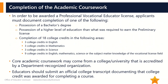In order to be awarded a professional vocational educator license, applicants must have completed one of the following options: possession of a bachelor's degree; possession of a higher level of education than what was required for the preliminary license; or documenting 18 college credits in the following areas — 3 college credits in English, 3 college credits in Mathematics, 3 college credits in Science, and 9 college credits in English, Math, Science, or in the subject matter knowledge of the vocational field. Applicants should upload an official college transcript into their ELAR account documenting that they were awarded college credit for their coursework.